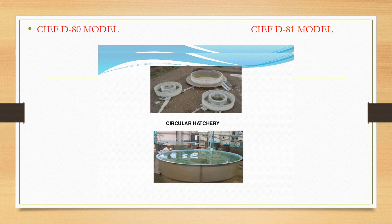The CIFD 81 model is an improved version of the CIFD 80 model. It was started in 1981 and includes a breeding and hatching unit with a water spray arrangement and aeration. There is a good arrangement of water spray and aeration in this model.